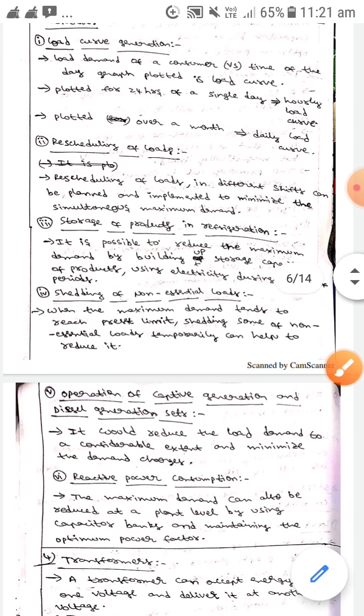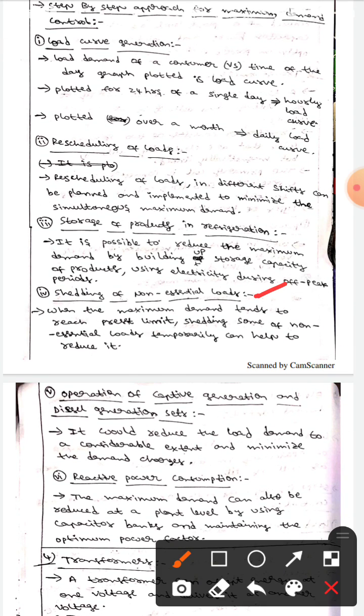The next one is setting of non-essential loads. When the maximum demand tends to reach the preset limit, setting some of the non-essential loads temporarily can help to reduce it.